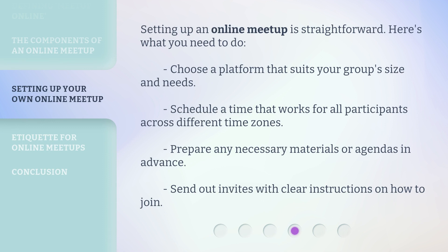Setting up an online meetup is straightforward. Here's what you need to do: choose a platform that suits your group's size and needs, schedule a time that works for all participants across different time zones, prepare any necessary materials or agendas in advance, and send out invites with clear instructions on how to join.